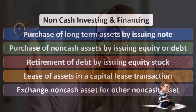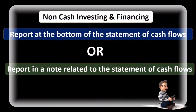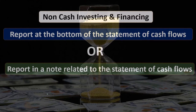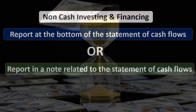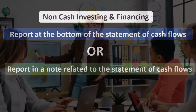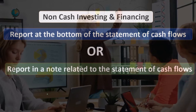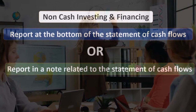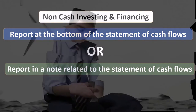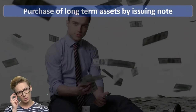What are we going to do with these non-cash items? We're going to report them at the bottom of the statement of cash flows, or report them in a note related to the statement of cash flows. We need to disclose these non-cash items to the reader of the financial statements, either directly connected to the statement of cash flows or in a note referencing it. That brings us back to the question: why are these non-cash things linked to the statement of cash flows? Why don't we just put them in a different note?